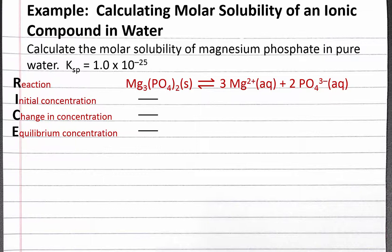Since we're dissolving magnesium phosphate in pure water, we don't have any magnesium or phosphate ions to begin with. Since we don't have any product to begin with, Q will be zero and we'll shift to the right to reach equilibrium. So our change in concentration will be plus 3x for magnesium and plus 2x for phosphate, where x is the moles of solid magnesium phosphate that will dissolve in one liter of solution. This means x is also our molar solubility, which is what we're solving for in this problem.